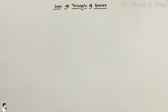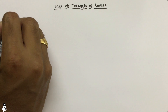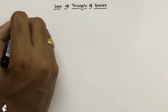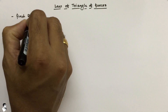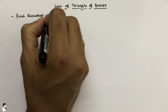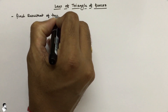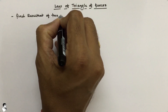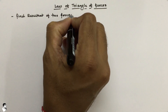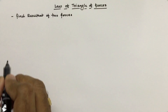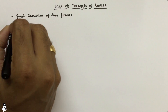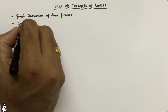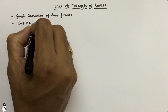Law of triangle of forces. This law is generally used to find the resultant of two forces. Where two forces are acting, you can use this law to find out the resultant — similar to the law of parallelogram of forces. But here we generally use the cosine and sine rule.